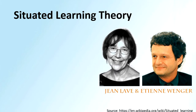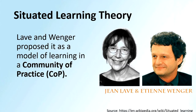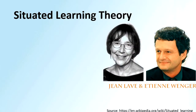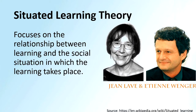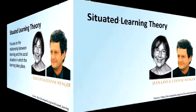There were basically two people, Jean Lave and Etienne Wenger, who proposed the situated learning theory. They proposed that situated learning theory is a model of learning in a community of practice. Their focus was on the relationship between learning and the social situation in which the learning takes place. Learning is always situational and the situation where learning is taking place has a very important role.